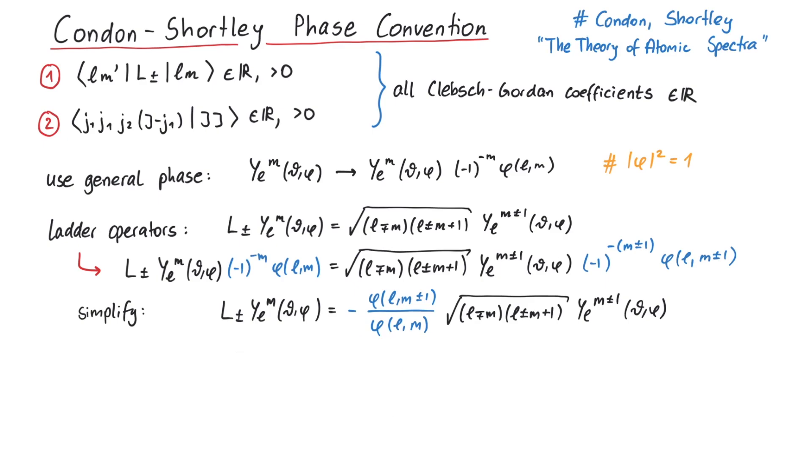For instance, one can show that any spherical harmonic can be obtained from another spherical harmonic by repeatedly applying ladder operators. And if we choose the phase phi according to the Condon-Shortley phase convention, this factor is always real and non-negative.